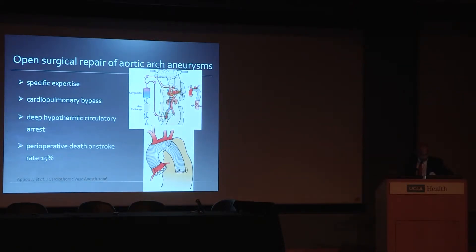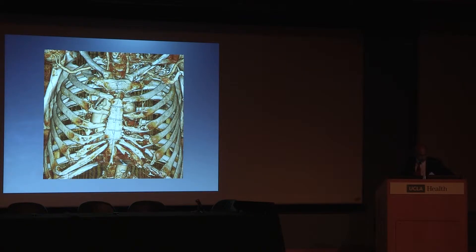In centers with specific expertise and high volume, the results are pretty good — especially with better techniques using cardiopulmonary bypass and deep hypothermic circulatory arrest. But overall, across all centers in North America, the perioperative death and stroke rate is still significant. The advantage of endovascular repair of arch aneurysms is that it gives you an option for patients who are either too sick for open repair or have anatomical constraints such as redo surgery or false aneurysms.